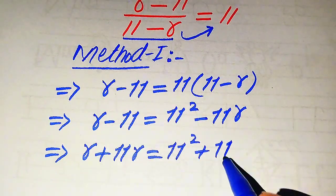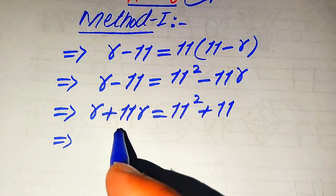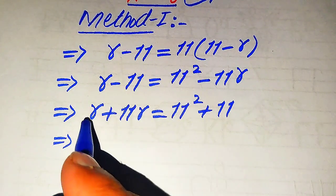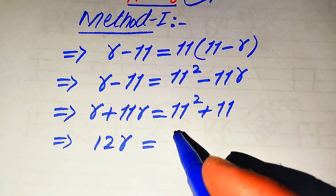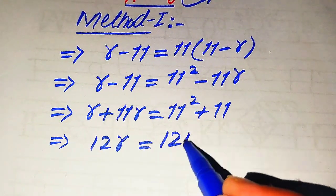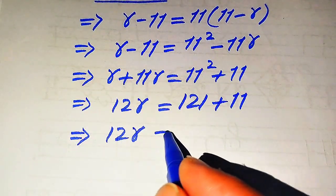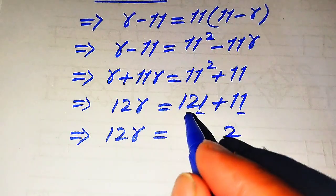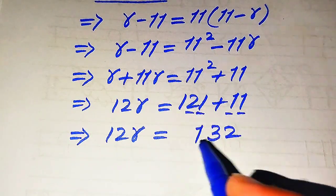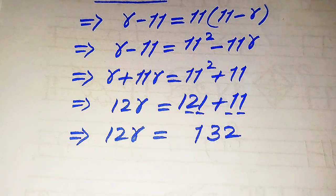We now add the two like variable terms. The coefficient of the first r term is 1 and the second is 11, so together they become 12r. On the right hand side, 11 squared equals 121, plus 11 gives us 132. So we have 12r equals 132.